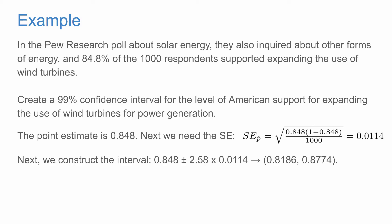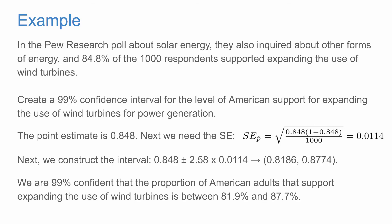Next, we can construct the confidence interval itself: 0.848 plus minus 2.58 times 0.0114. This gives us a confidence interval of 0.8186 to 0.8774. This means we are 99% confident that the proportion of American adults that support expanding the use of wind turbines is between 81.9% and 87.7%.